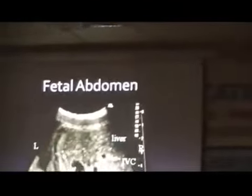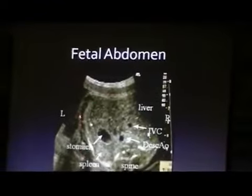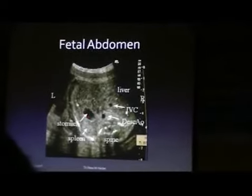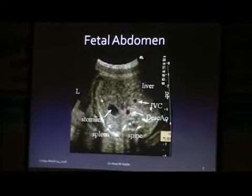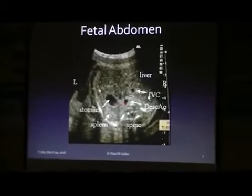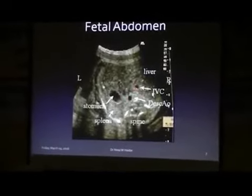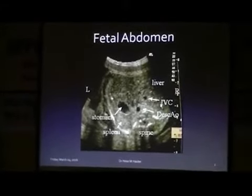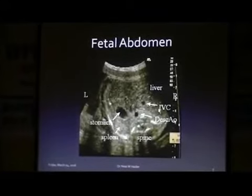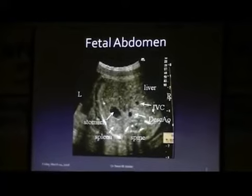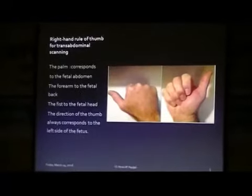This is our everyday practice — we do the abdominal circumference, and in the abdominal circumference this is the stomach, which indicates the fetal left side. This is the descending aorta, which is a bit left to the midline, and this is the IVC on the right side, and liver on the right side. From this section we go cranially towards the fetal head, and just above the diaphragm we will find the four-chamber view.